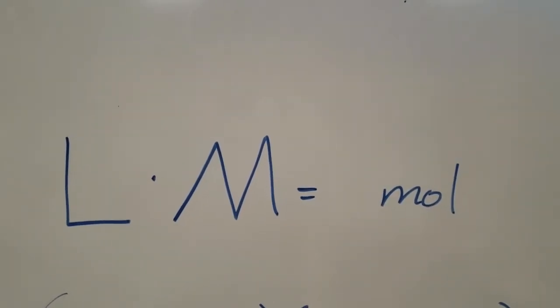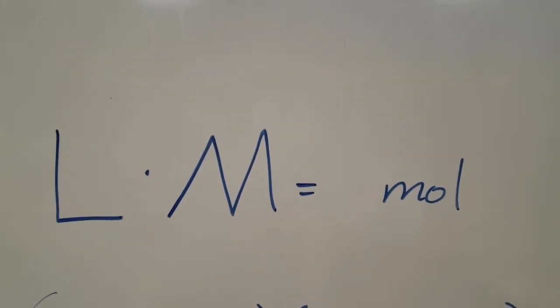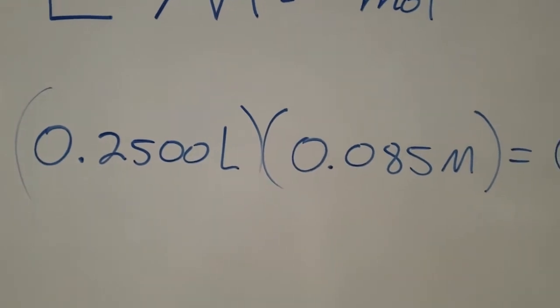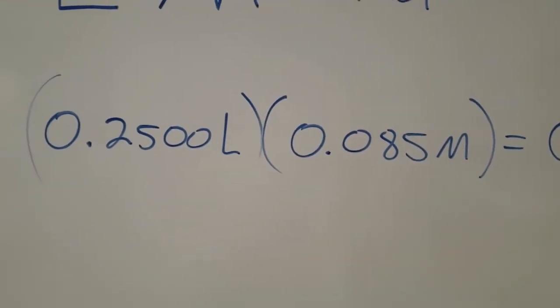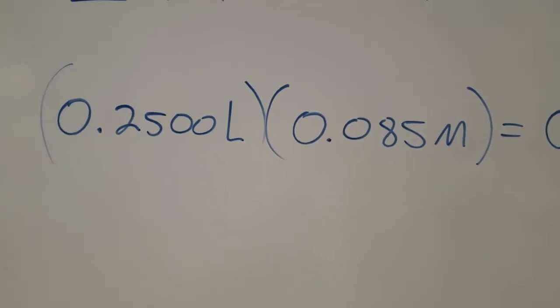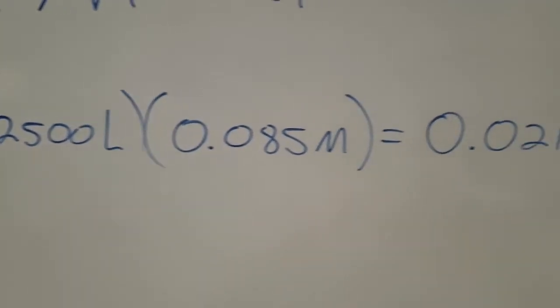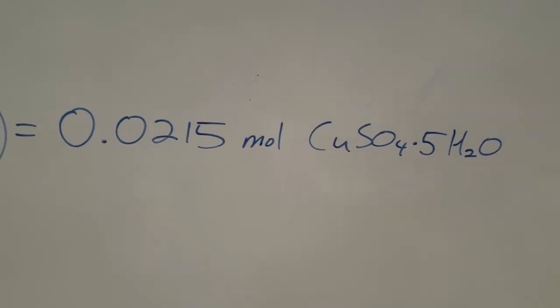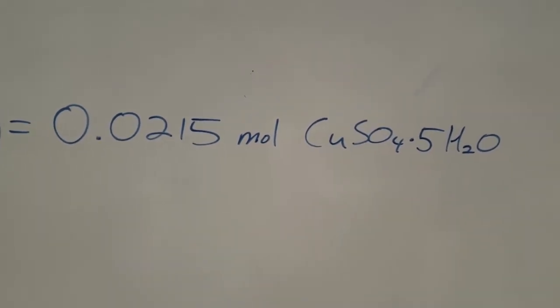Here's the rearranged algebraic equation for molarity to equal the moles. We're going to have the 0.25 liters times 0.085 molar to come up with the number of moles of copper sulfate. Now, this copper sulfate is going to be pentahydrate, so five waters are incorporated into the crystal. So this is the number of moles.